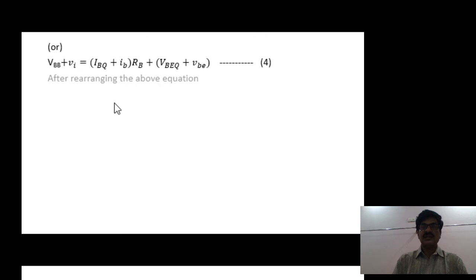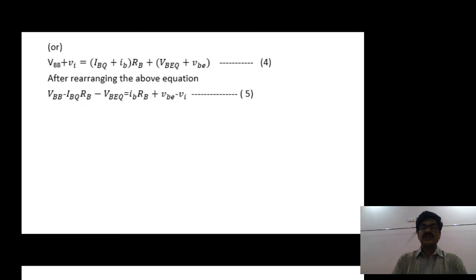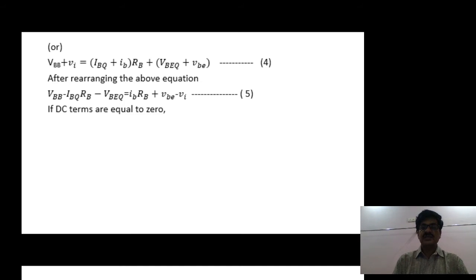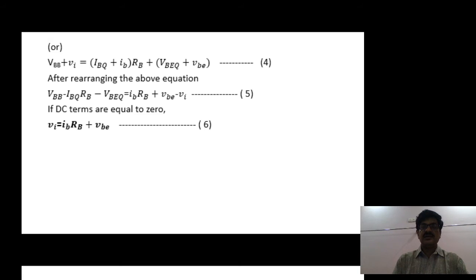Then we separate all AC components and DC components — the DC components are represented on the left-hand side. Our aim is to develop the AC equivalent circuit, so we assume all DC components are equal to zero. With that, equation 6 becomes: Vi = IB·RB + VBE.